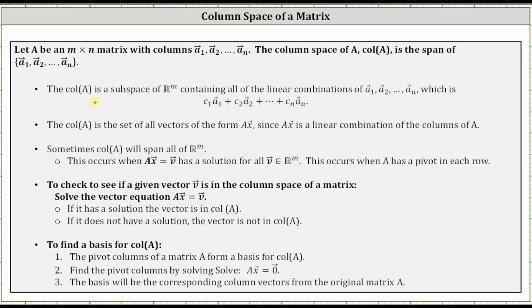The column space of A contains all the linear combinations of the vectors a sub one through a sub n, which means the column space of A is in the form shown here, where c sub one through c sub n are scalars.